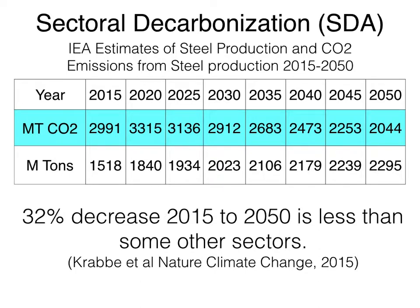I'm going to introduce the sectoral decarbonization approach with an example from Oscar Crabb's article published in 2015. For the steel industry, they expect a 32% decline in CO2 emissions over the 35 years from 2015 to 2050 — that's about 1% a year. That's less than half of the 3% solution's recommendation of 2% to 3% per year for companies in the industrial sector.